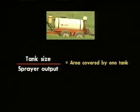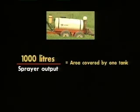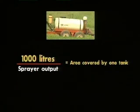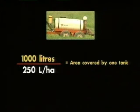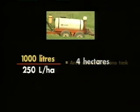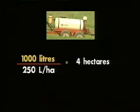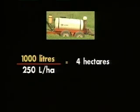How many hectares will be covered by one full tank? The tank size is 1,000 liters divided by the calibrated sprayer output of 250 liters per hectare, which equals 4 hectares. Therefore, one full tank will cover 4 hectares.